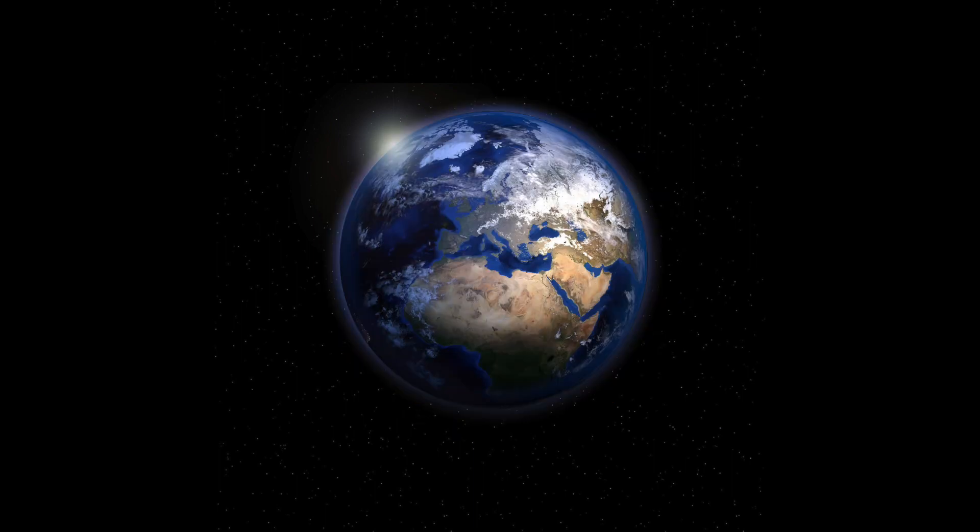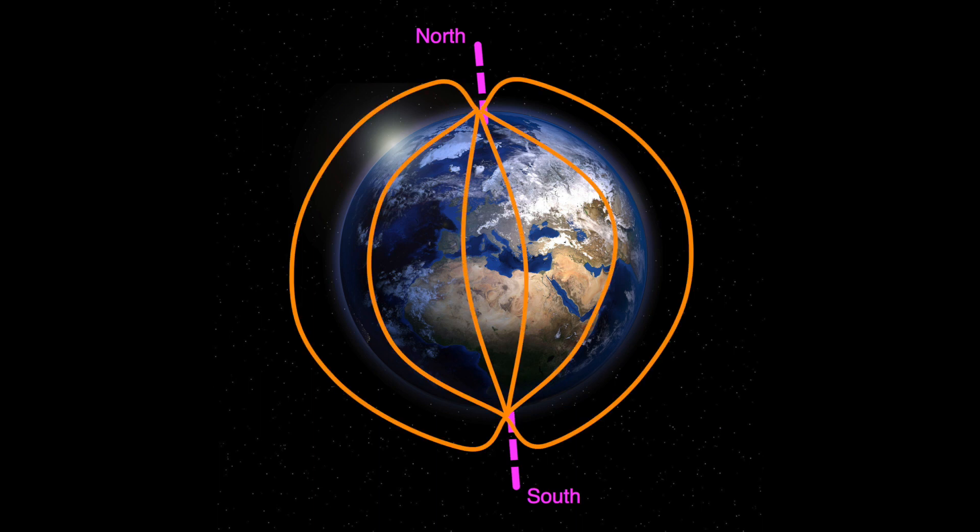Like all magnets, the Earth has a North Pole and a South Pole. Its magnetic field can be represented by lines that come out of the South Pole, curve all the way around the planet, and return through the North Pole.